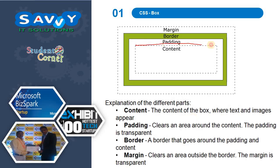The innermost part is the content. In between the content and the border is called padding, and from the border to the outside is the margin. Content is where text and images appear. Padding clears a transparent area around the content. Border goes around the padding and content. Margin clears a transparent area outside the border.